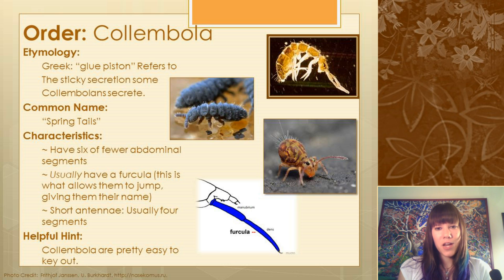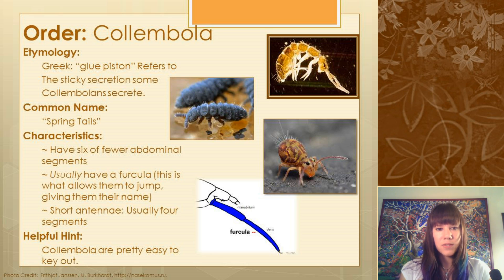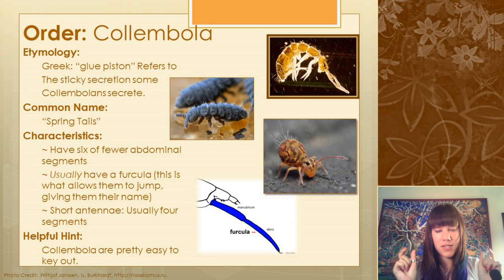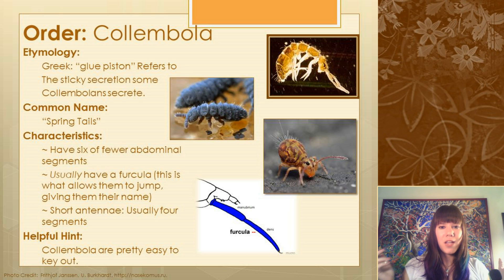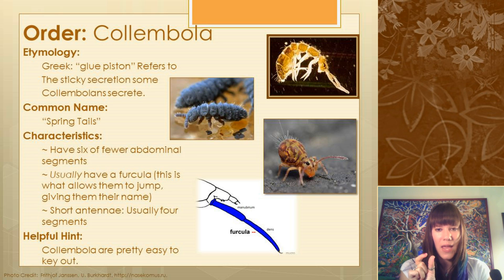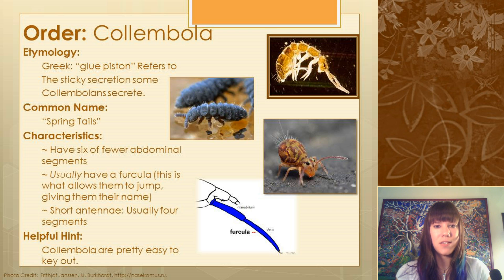Other characteristics are that they have six or fewer abdominal segments and usually have really short, stubby antennae. Collembola are pretty easy to key out because they all look pretty different — you have really short fat ones, really round fat ones, and some longer ones, so they're all pretty easy to identify.